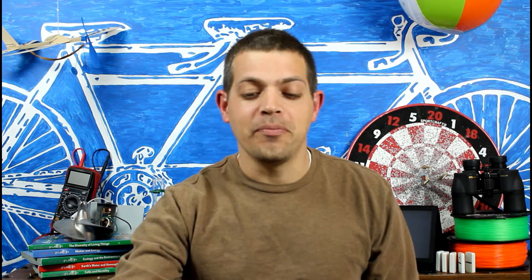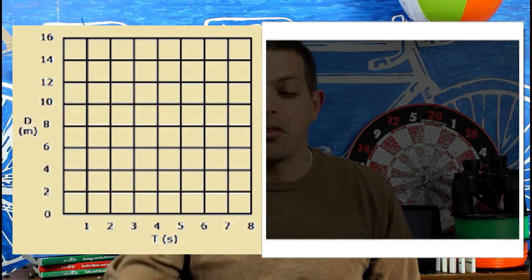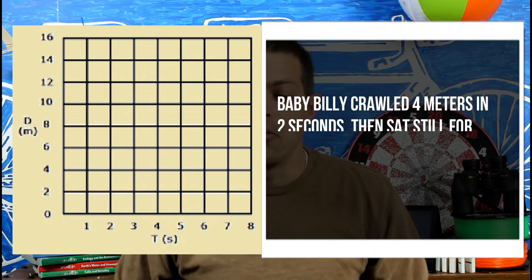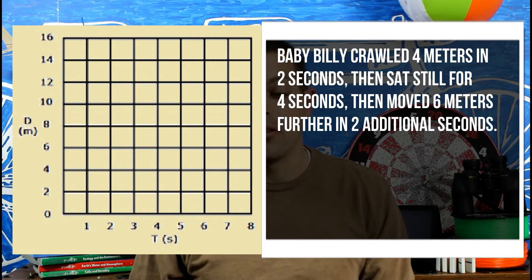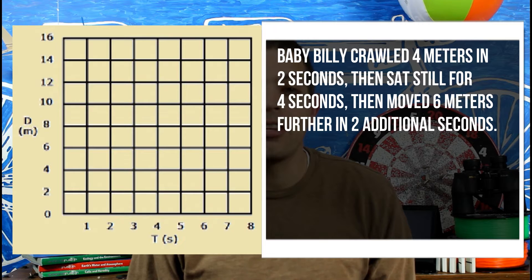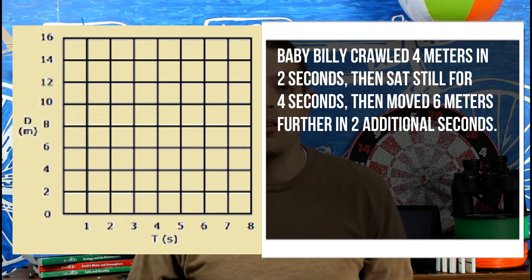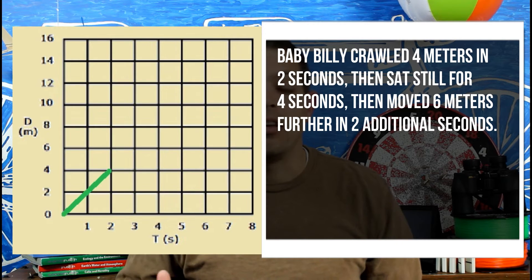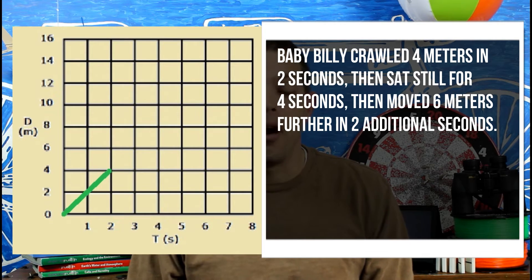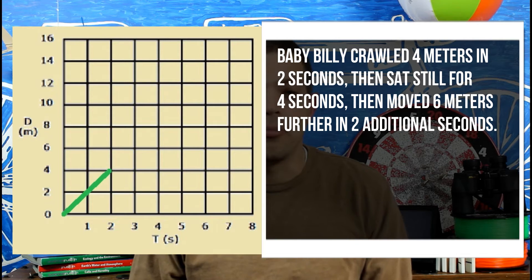Our next problem has to do with maybe Billy. He crawled four meters in two seconds, then sat still for four seconds, then moved six meters further in two additional seconds. So what we're going to see is there's movement from zero meters to four meters and we run in two seconds. So you see a slope going upwards to show positive velocity or velocity moving forward.